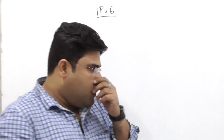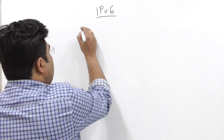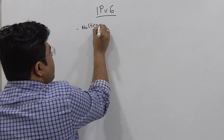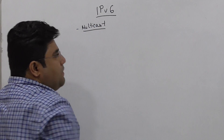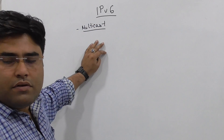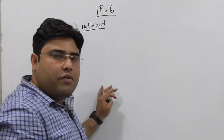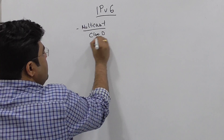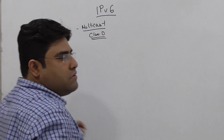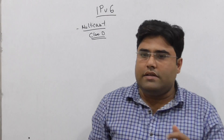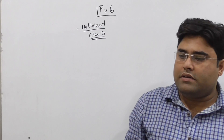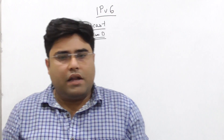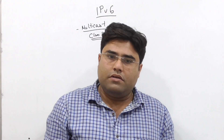IPv6 also has Multicast. What is Multicast in IPv4? In IPv4, the entire Class D IP range is reserved for Multicast. Similarly, Multicast IPv6 works the same way.